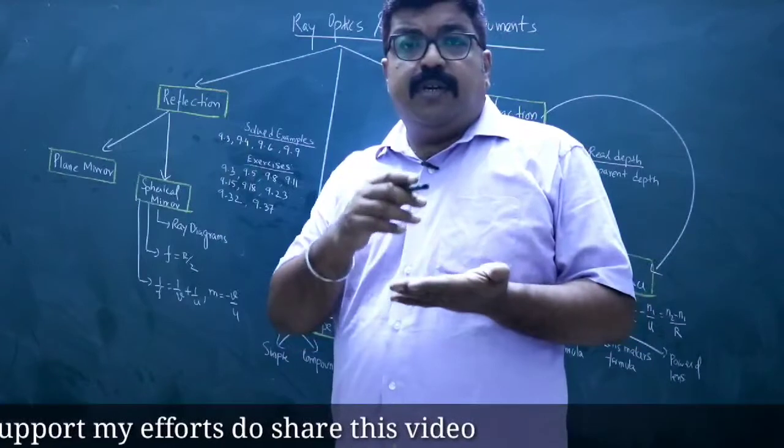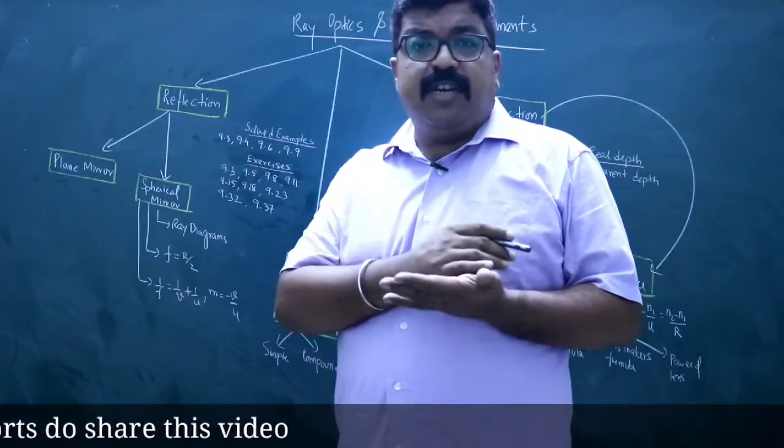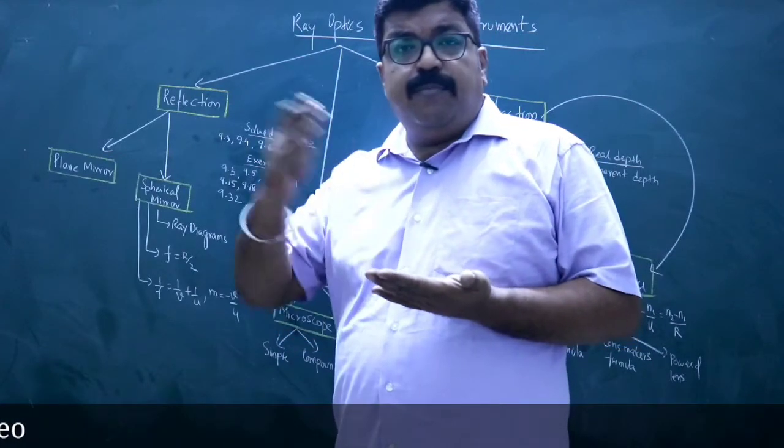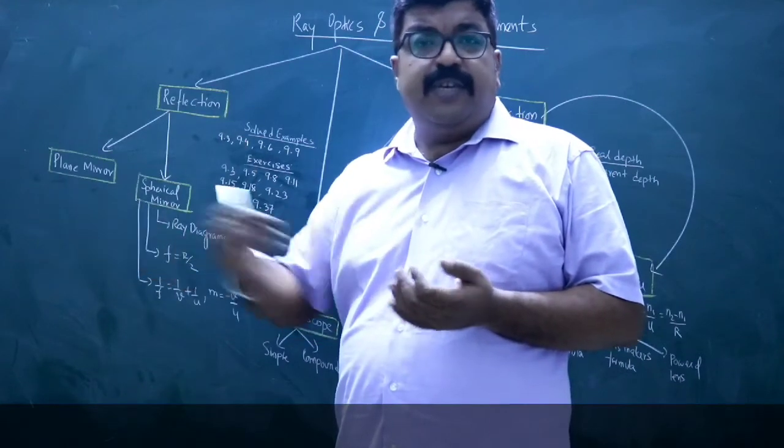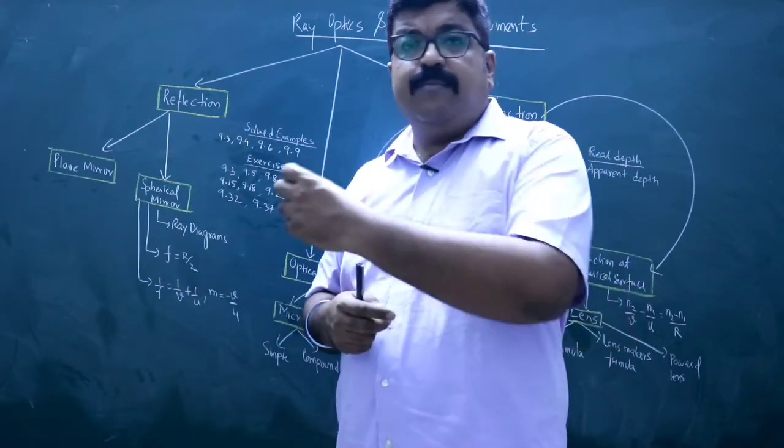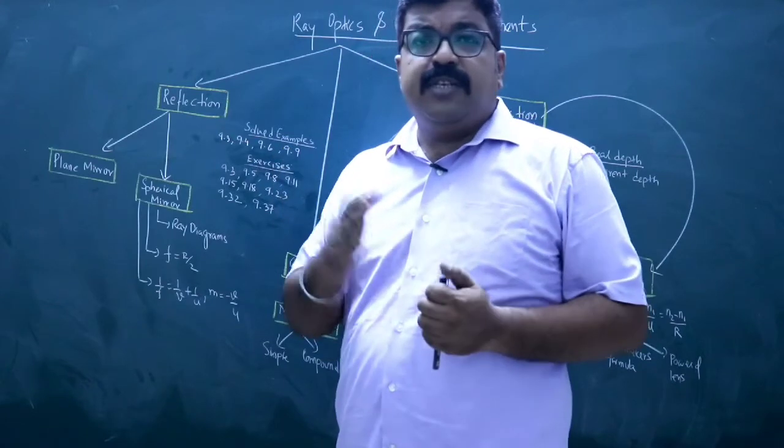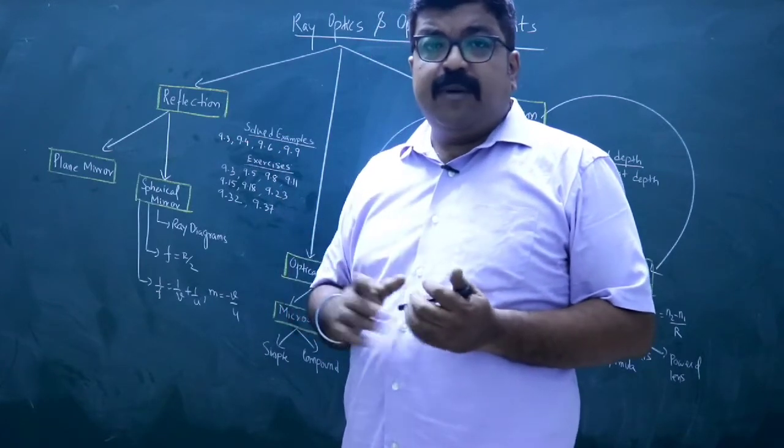If the object is below the pole and focus, then where will the image be? If the object is beyond focus, then where will it be? That is between f and twice f. In different cases, what will the image be in different positions? You will practice the proper Ray Diagram.